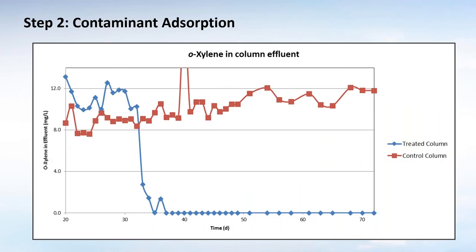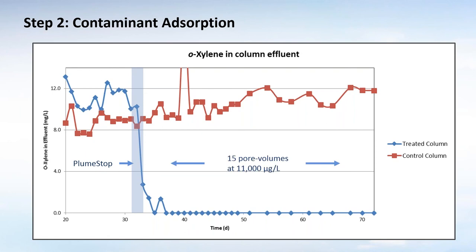Looking at adsorption: in this test we've got xylene. There's about 11 milligrams per litre being flowed through a column. We apply the Plume Stop and immediately we get down to non-detect. We continue flowing 15 pore volumes through at fairly high concentration and see no breakthrough at all — we're taking the contamination out of the groundwater.